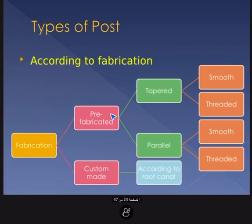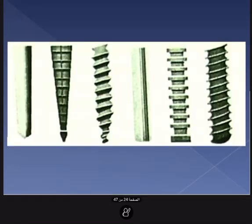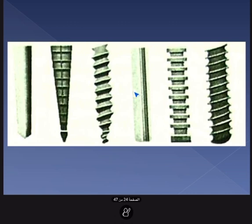According to fabrication, posts are either pre-fabricated or custom made. Pre-fabricated posts come in many types: tapered or parallel, and for both there are smooth and threaded variations — tapered smooth, tapered threaded, parallel smooth, and parallel threaded. Custom made posts are fabricated according to the shape of the root canal. Examples include parallel smooth, tapered serrated, and threaded parallel types.